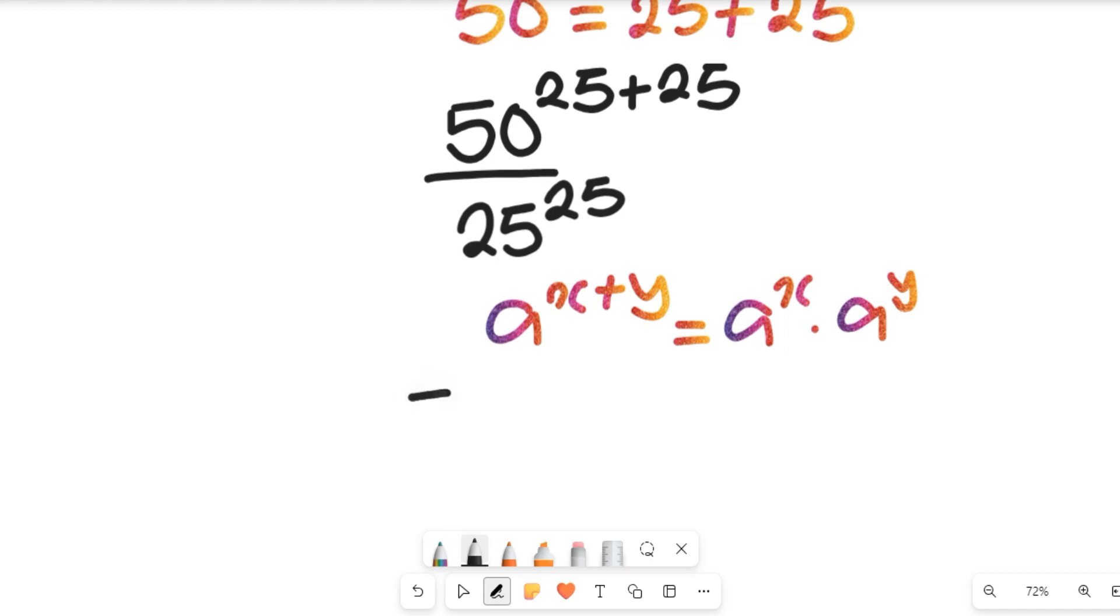Now having seen that, that means the numerator of that expression can be 50 to the power of 25 multiplied by 50 to the power of 25, and this will be divided by 25 to the power of 25.